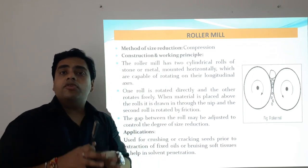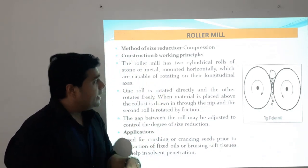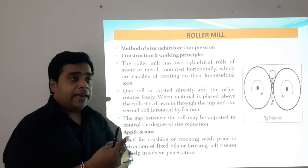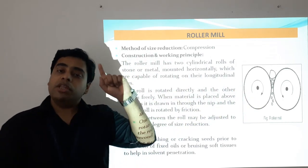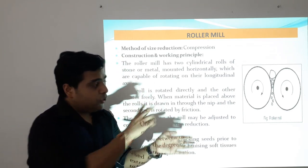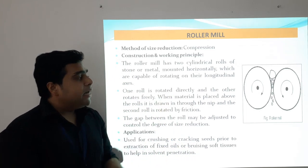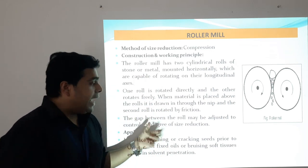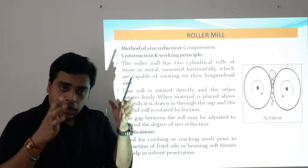The roller mill has two cylindrical rolls of stone or metal, mounted horizontally and capable of rotating on their own longitudinal axes. One roller is rotated directly by a motor and the other roller rotates freely — so we only need to connect the motor to one roller, and in contact with the feed, the other roller rotates by friction. This reduces energy requirements. The gap between the rolls may be adjusted to control the degree of size reduction depending on the feed and the desired product.